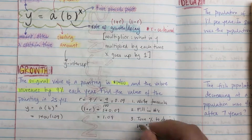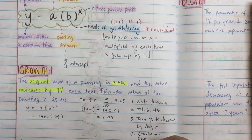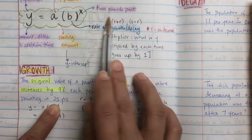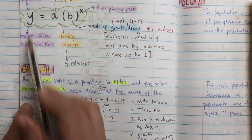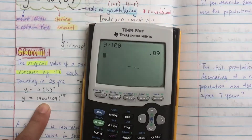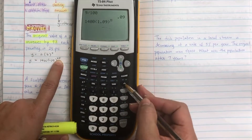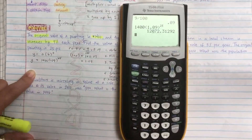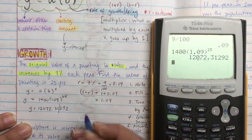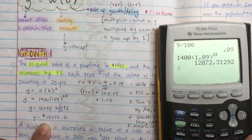Plug that into the parentheses for B. Step four: for growth you add one; for decay you subtract from one. The final thing is x — the time period. It says 25 years, so they're asking what is the amount after that. Step five: punch it into the calculator. Type it as 1400, open parentheses, 1.09, then use that exponent button — the little triangle without a bottom — and then enter the time 25. Because this is money we need two decimal places for cents, giving us $12,072.31.